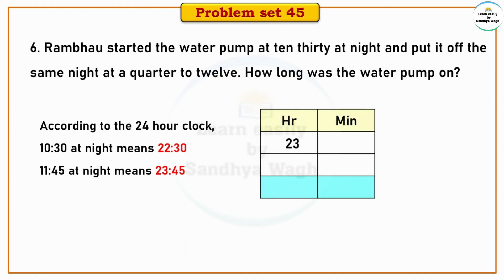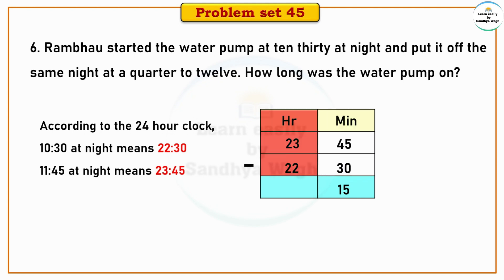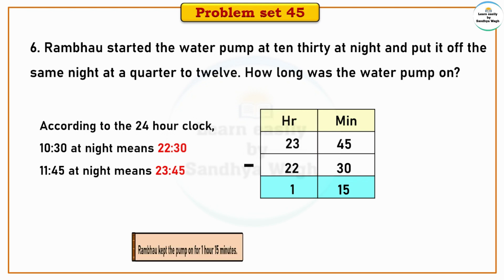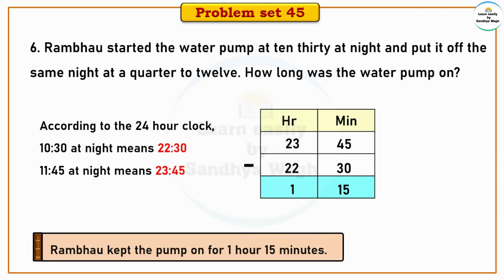Subtracting: 45 minus 30 equals 15 minutes, and 23 minus 22 equals 1 hour. So our final answer is Rambhav kept the pump on for 1 hour 15 minutes.